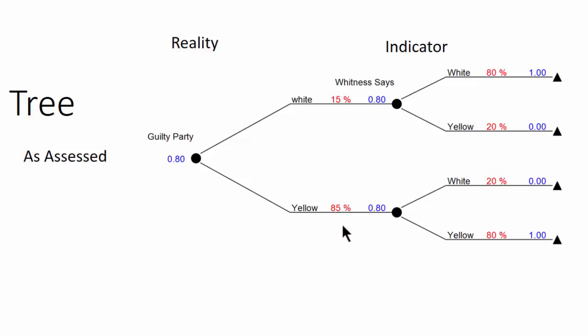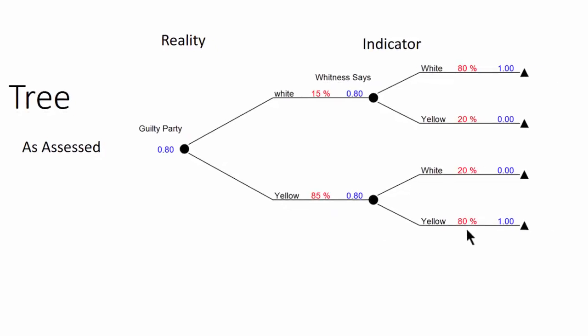And the witness would be 80% correct. So if it was a white cab he'd be correct 80% of the time. If it was a yellow cab he'd be correct 80% of the time.